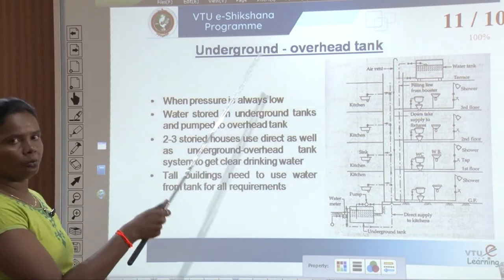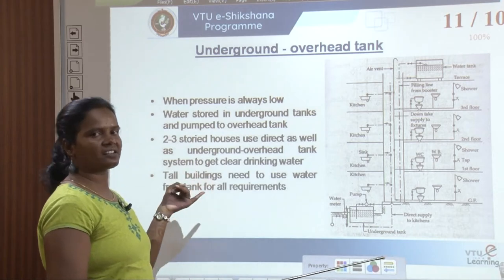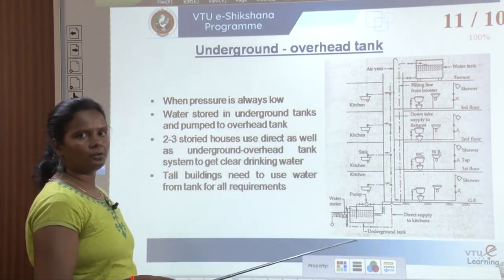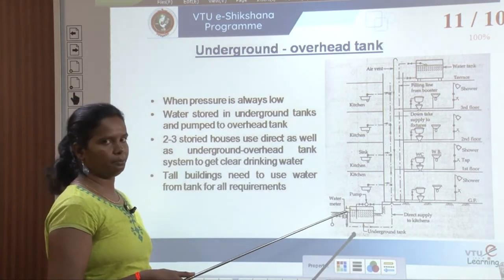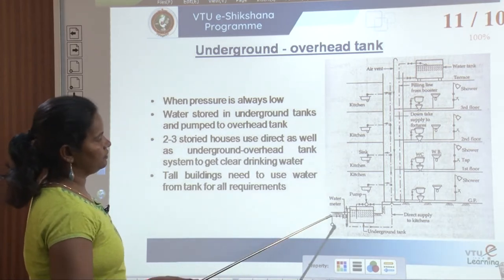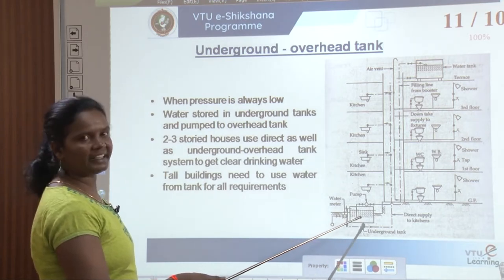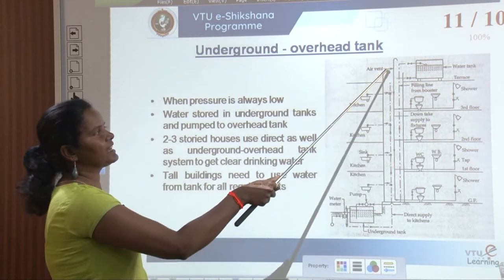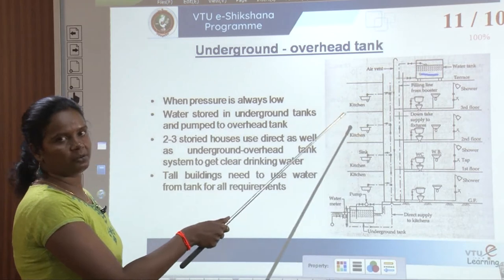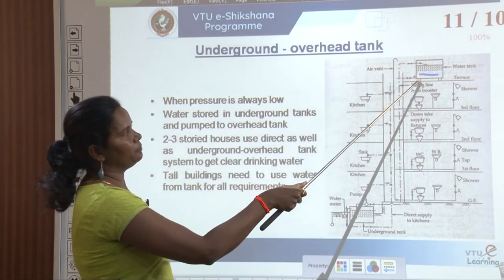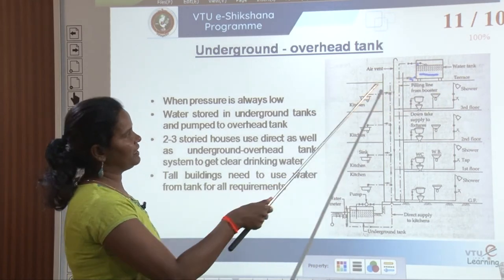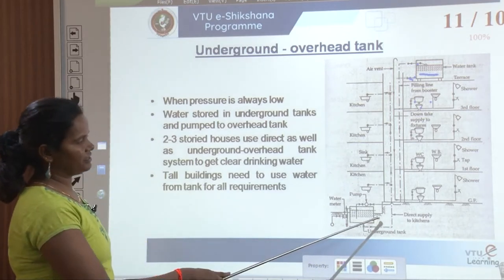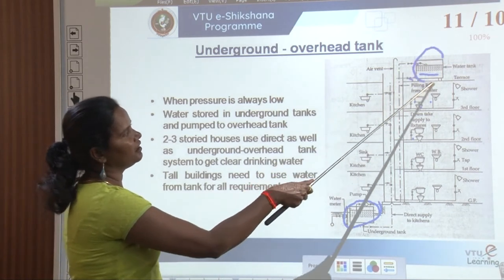The next is underground and overhead water tank — another form of indirect supply. From the city mains, after the water meter, water goes directly into the sump (underground water tank). From there, the water is transferred to the overhead water tank (OHT). Below the overhead tank, a pipe is connected to allow water to flow to all fixtures on each floor. This is the basic difference: we have both an underground and overhead water tank.